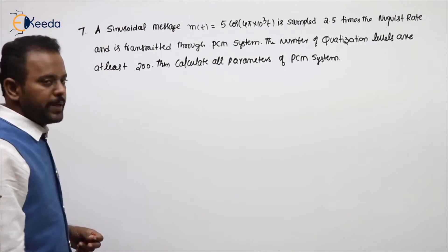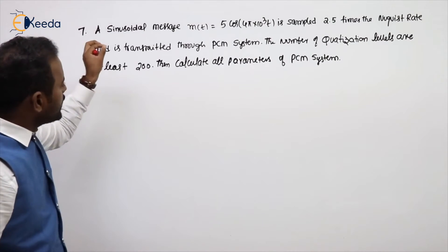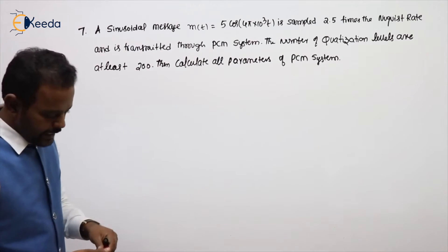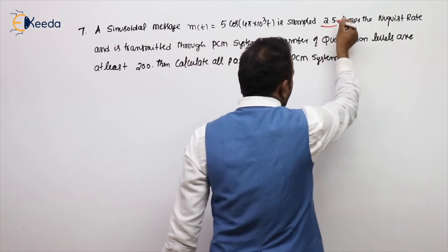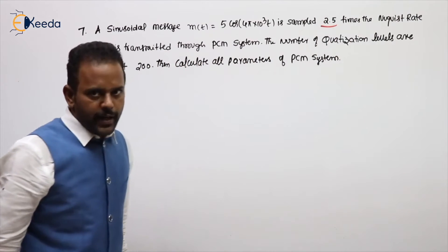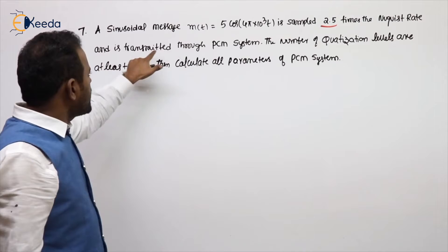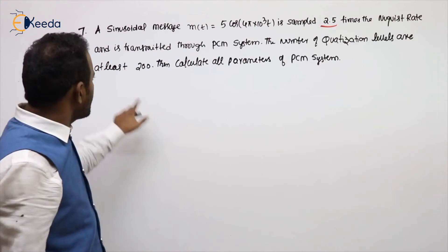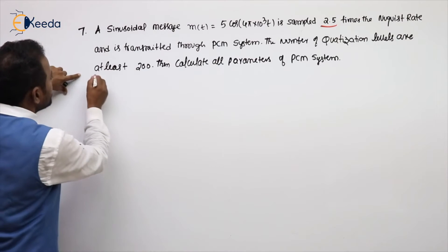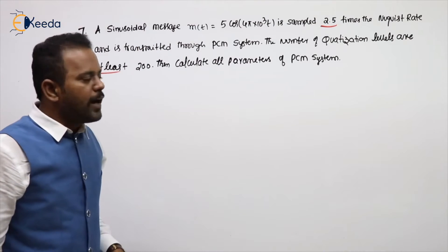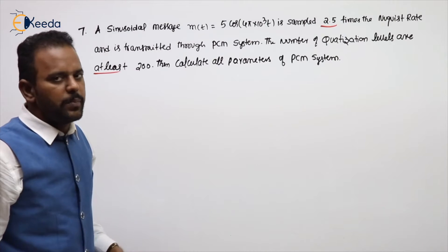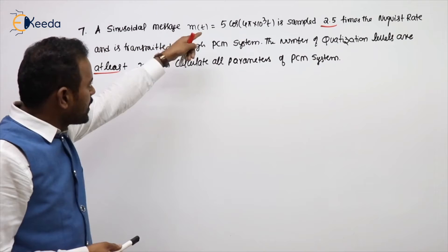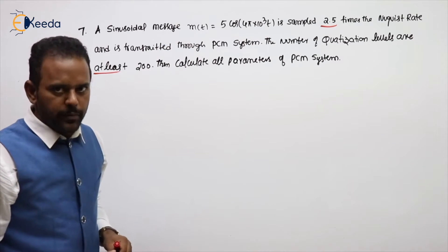See the next problem on PCM. A sinusoidal message M(t) = 5 cos(4π × 10³t) is sampled 2.5 times the Nyquist rate and is transmitted through a PCM system. Number of quantization levels are at least 200. Calculate all parameters of PCM system. In the previous slide I taken general problem, here I taken sinusoidal one.